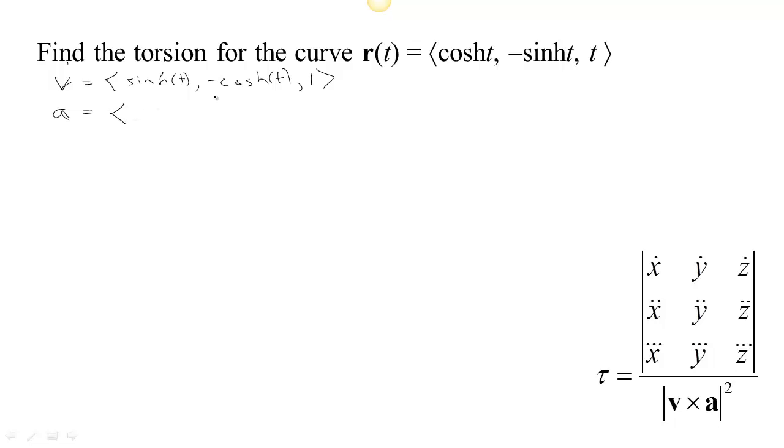And then for the acceleration we get, the derivative of sinh is cosh and the derivative of -cosh is -sinh, so we get cosh t, -sinh t, and 0.